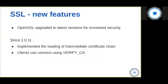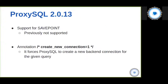Regarding SSL, we upgraded OpenSSL and implemented loading of intermediary certificate chains, allowing clients to connect to ProxySQL using the Verify CA flag. In ProxySQL 2.0.13, we finally implemented SavePoint support — transactions were always supported but SavePoints were not until this version. We also introduced a new query annotation: if a client executes a query with the annotation 'create_new_connection=1', ProxySQL forces the creation of a new connection to execute that specific query.